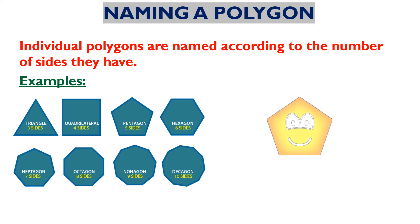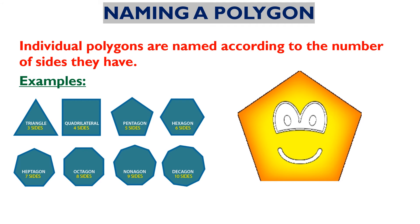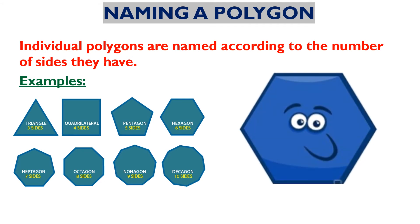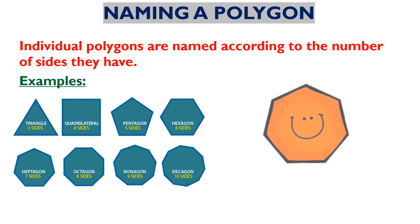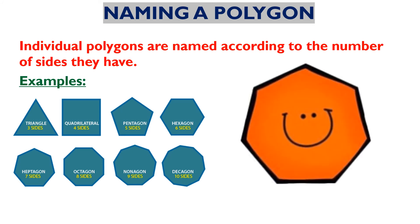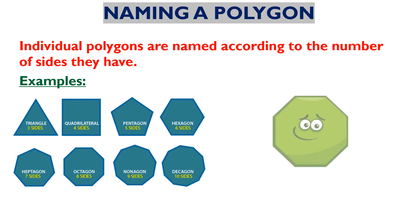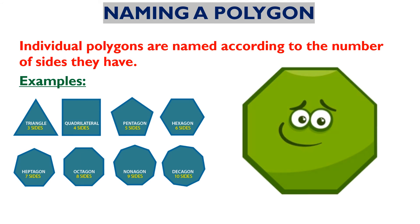Then pentagon with five sides and five vertices. Then hexagon with six sides and six vertices. Then heptagon with seven sides and seven vertices. Then we have octagon with eight sides and eight vertices.